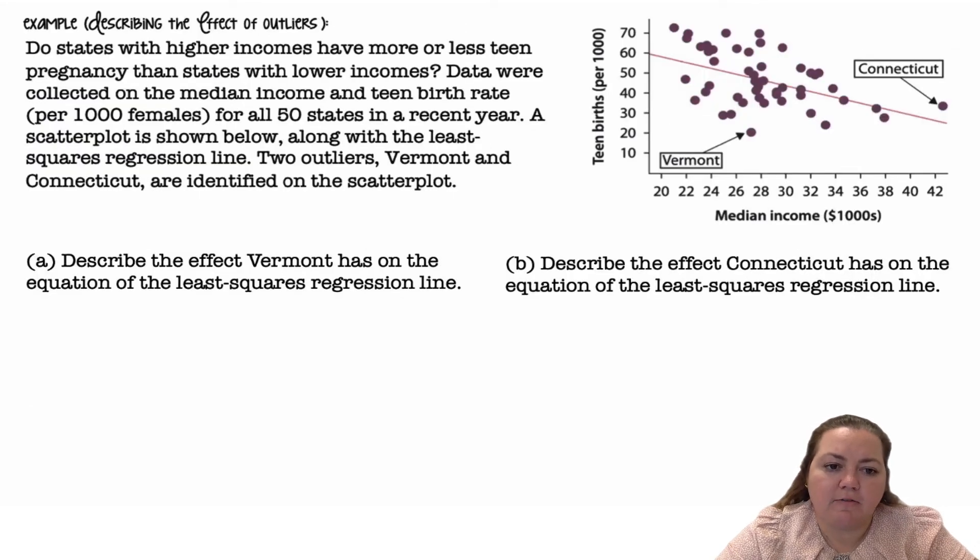All right, describing the effects of an outlier. Do states with higher incomes have more or less teen pregnancy than states with lower incomes? Data were collected on the median income and teen birth rate per 1,000 females for all 50 states in a recent year. A scatter plot is shown below along with the least squares regression line. Two outliers, Vermont and Connecticut, are identified on the scatter plot.